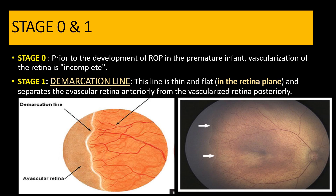Now let us understand each stage individually. In stage zero we have a premature infant in which we know that the retina is not completely vascularized. However, we do not see any typical changes at the junction between the vascular and avascular retina to classify it into stage one, two, three, or four. So that is called stage zero ROP.